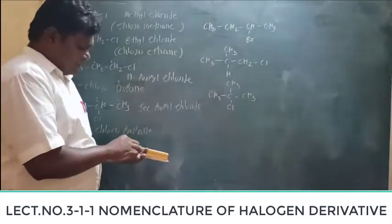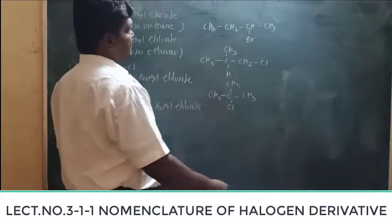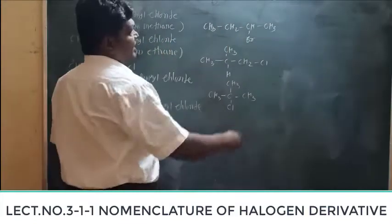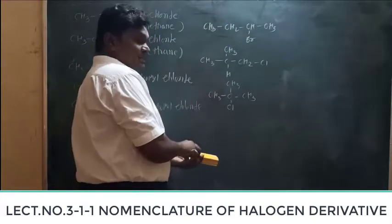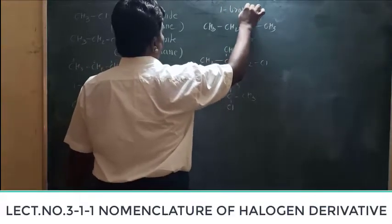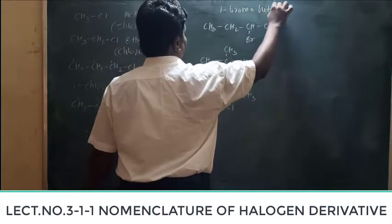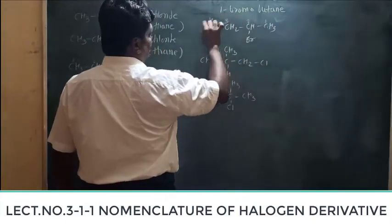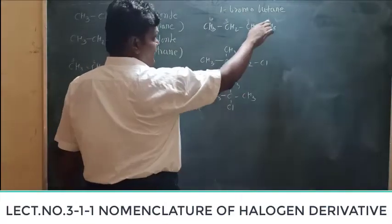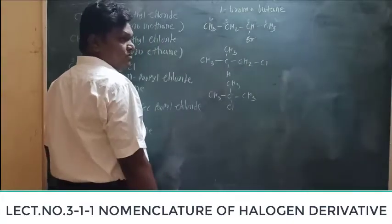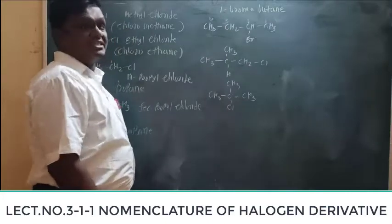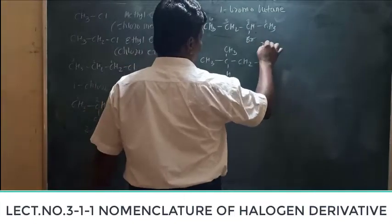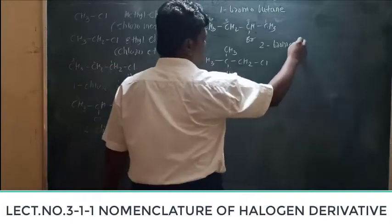Now these are the butane forms. For the IUPAC name, first select the longest carbon chain: one, two, three, four. The bromine atom is attached to the first carbon, so you write 1-bromobutane. For the next isomer, if you label from the right-hand side the bromine acquires the lowest number, which is two. So the IUPAC name is 2-bromobutane.